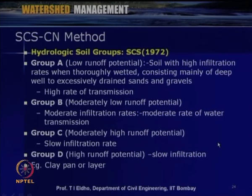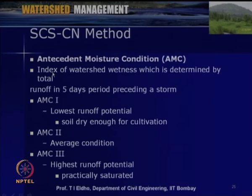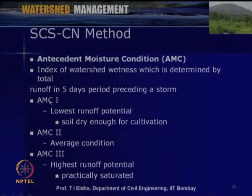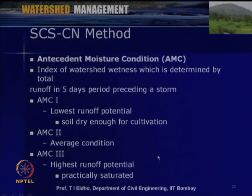Hydrologic soil groups are classified into four categories: Group A — low runoff potential, high infiltration rates, deep well-drained sands and gravels; Group B — moderately low runoff potential, moderate infiltration and transmission rates; Group C — moderately high runoff potential, slow infiltration rate; and Group D — high runoff potential, slow infiltration rate like clay or clay layer. Antecedent moisture conditions (AMC) are also important: AMC 1 is lowest runoff potential (dry soil), AMC 2 is average, and AMC 3 is highest runoff potential (saturated soil).